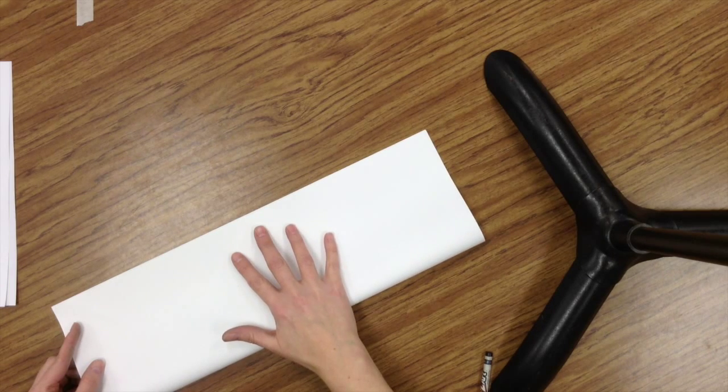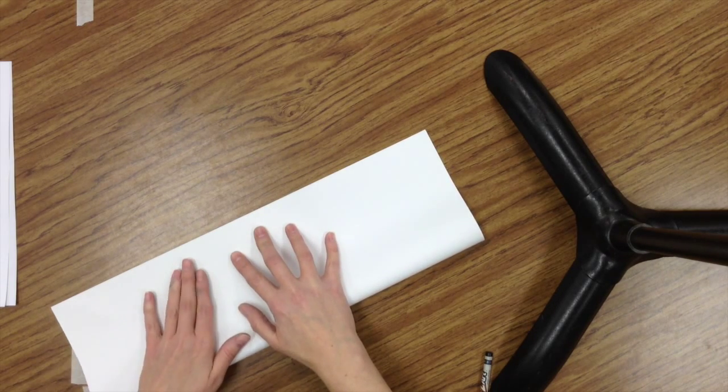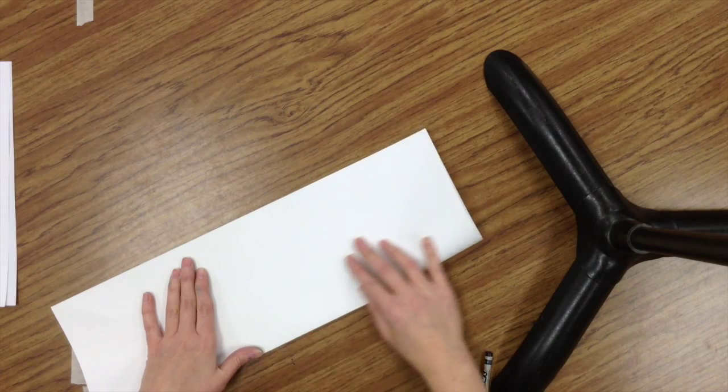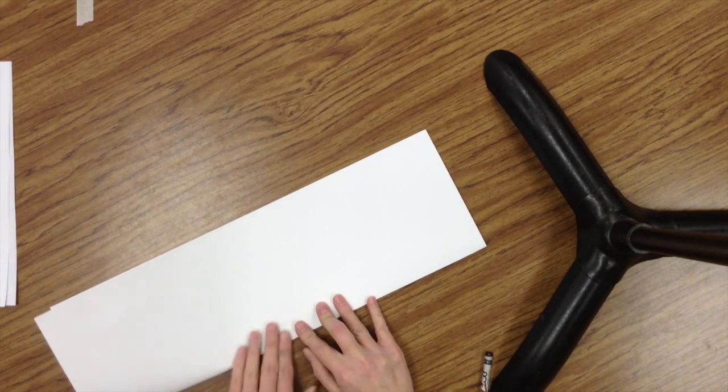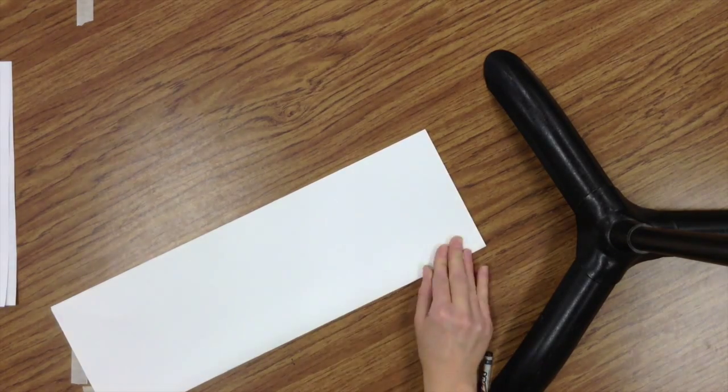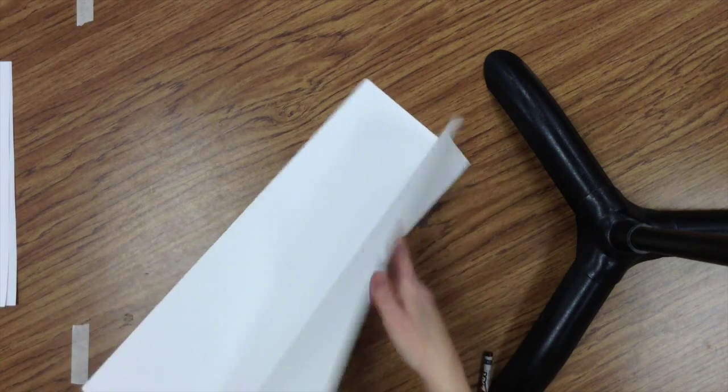When I fold, I line my corners up and I use the table to create my crease. I just made my line of symmetry.